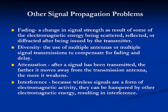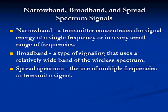Attenuation: after a signal has been transmitted, the further it moves away from the transmission antenna, the more it weakens — that's called attenuation. Interference occurs because wireless signals are a form of electromagnetic activity and can be hampered by other electromagnetic energy. Narrowband is when a transmitter concentrates signal energy at a single frequency or in a very small range of frequencies. Broadband uses a relatively wide band of the wireless spectrum, and spread spectrum is the use of multiple frequencies to transmit a signal.